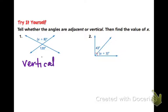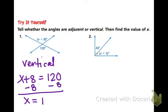Because they are vertical, they are equal to each other. So the quantity x plus 8 must be equal to 120. Use your inverse operations and problem solving skills to solve for x. So we would subtract 8 from both sides to find x is equal to 112.